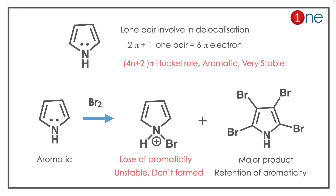For bromination, there are two possibilities: N-bromination and ring bromination. N-bromination is not possible because you would lose the aromaticity, making it unstable — it won't form at all. So the only possibility is ring substitution. The major product retains aromaticity, and bromination occurs at the 4-position.